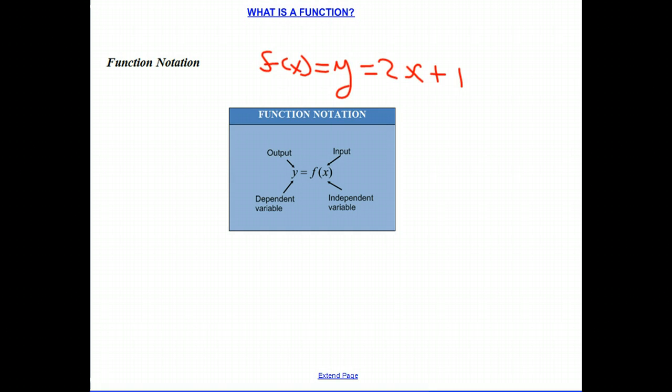What we're saying here is that y is the dependent variable and it's the output. The value of y depends on what the input is. The x is our independent variable, and this whole thing is what's called a rule that will determine what y or a function is equal to.